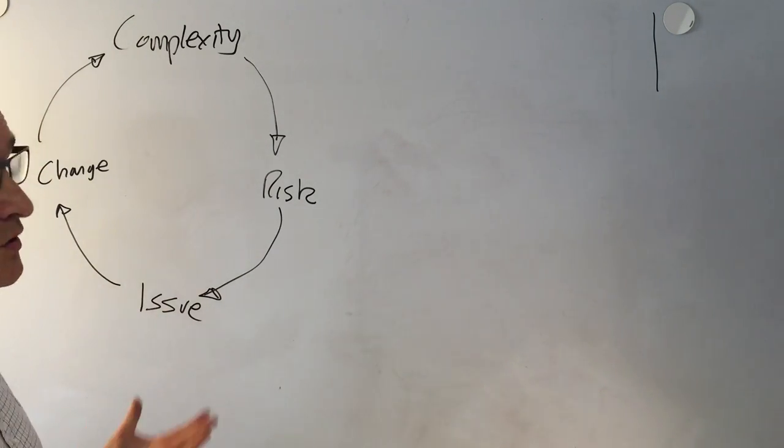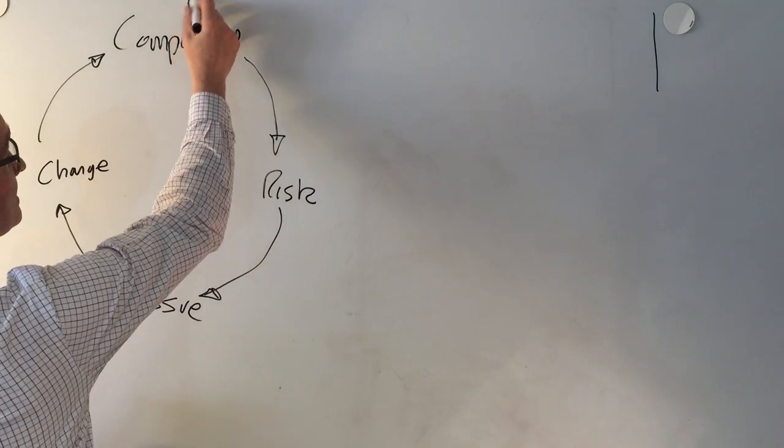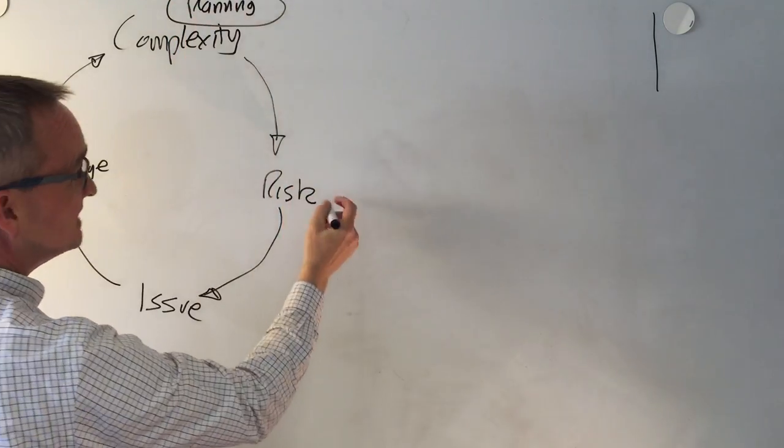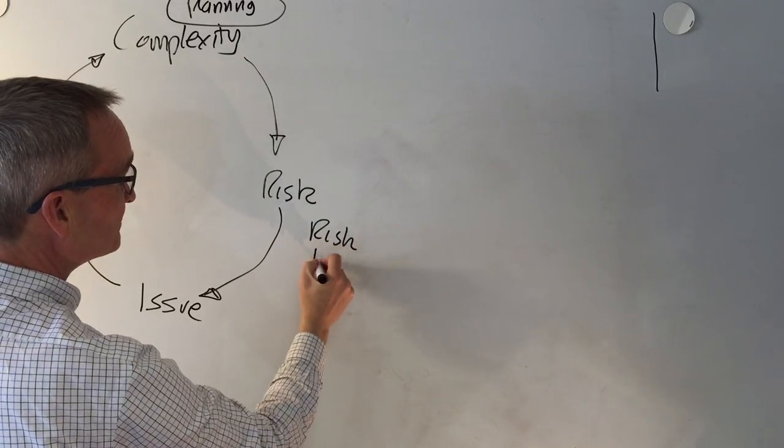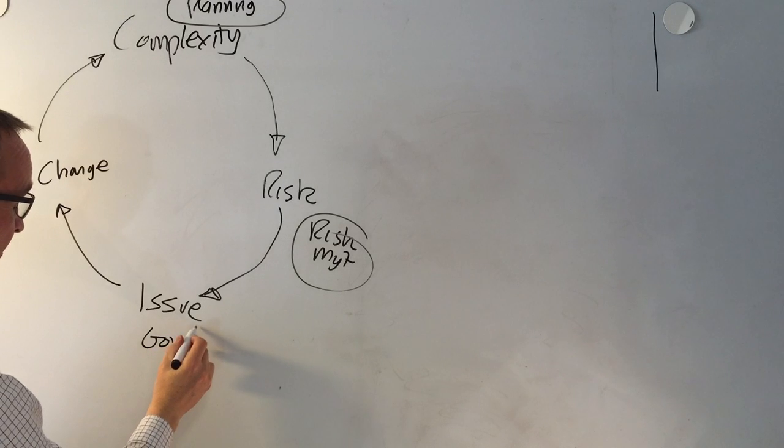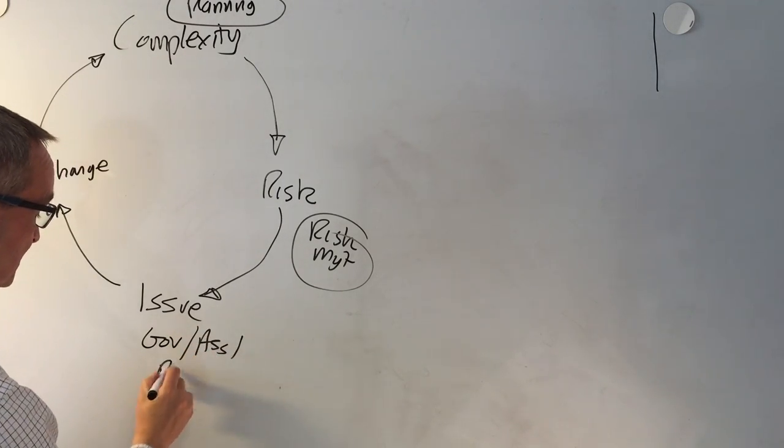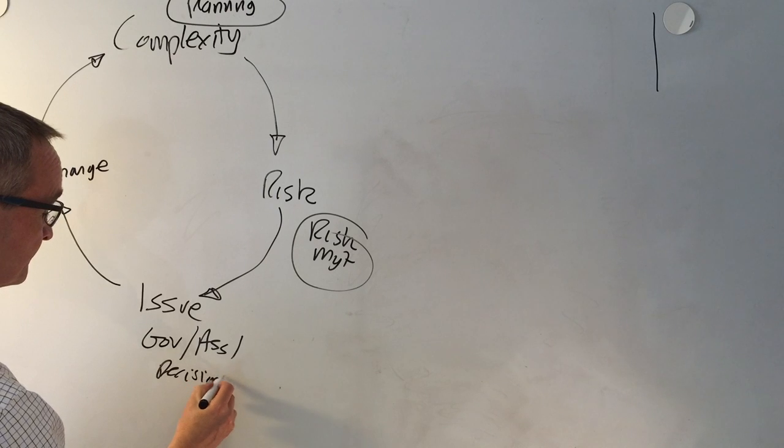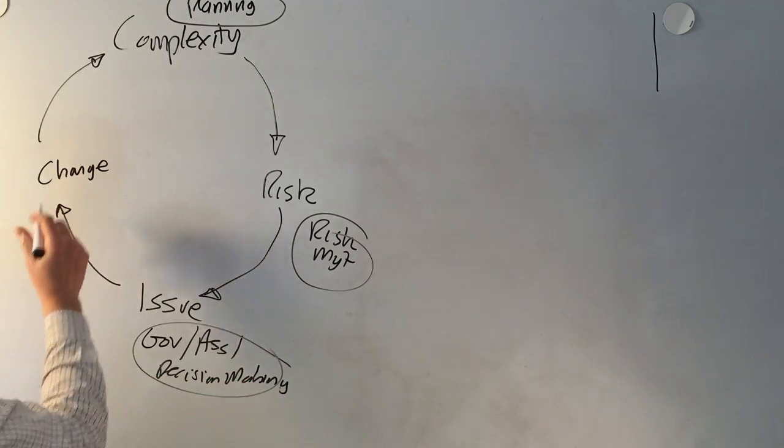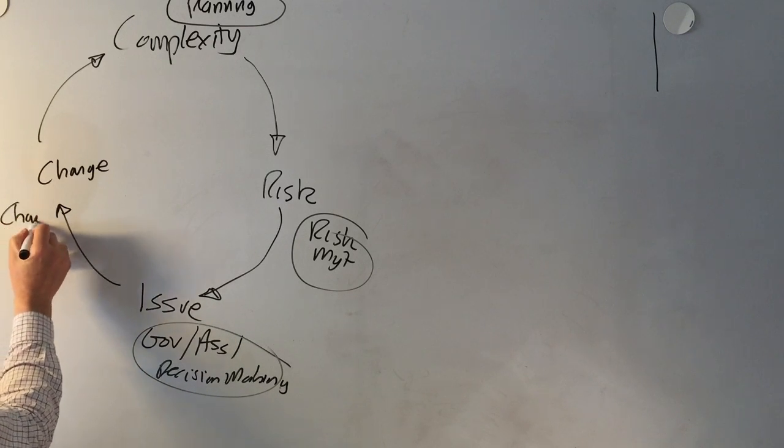Now project leaders need to deal with this in all sorts of different ways. For complexity, there's planning. For risk, of course there is risk management. For issues, there's good governance, assurance, decision making. And for change, of course there is change management.